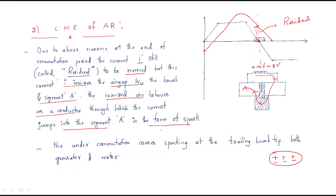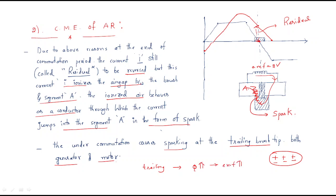Due to this, some spark is generated at segment A. The under-commutation causes sparking at the trailing brush strip in both generator and motor. This occurs at the trailing brush because the flux value is high there — high flux means high generated EMF, which causes sparking in both the generator and the motor.